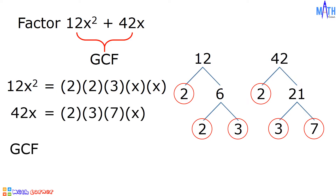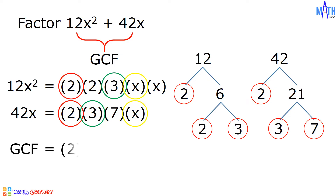Let us determine the GCF. Since 2 is common, 3 is common, and x is common, we have 2 times 3 times x, and it is equal to 6x. And this is the greatest common monomial factor.